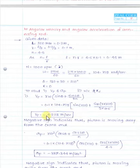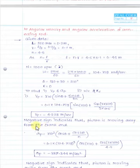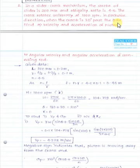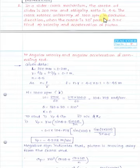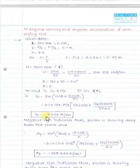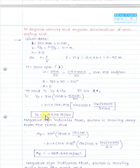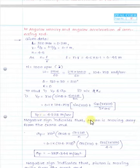The negative sign for velocity indicates the piston is moving away from the crank end. When the crank moves from IDC to ODC, the piston moves towards the crank end; when moving from ODC to IDC, the piston moves away from the crank end. If velocity is positive, the piston moves towards the crank end; if negative, away from the crank end.